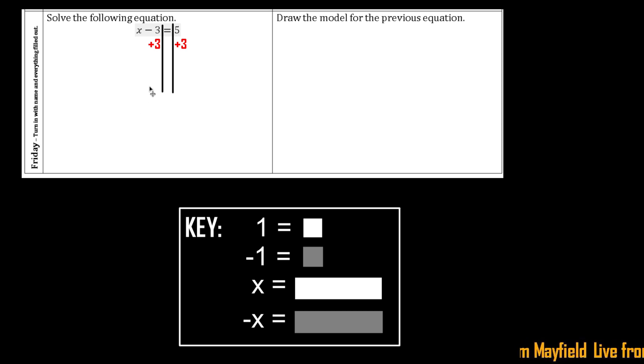On the left side, the 3s cancel out. We had 3 negatives and 3 positives, those cancel out. So what are we left with? We're just left with the x. And then on the right side we're left with that equals 8. So pretty straightforward, just one step.